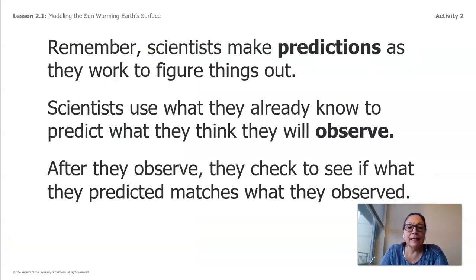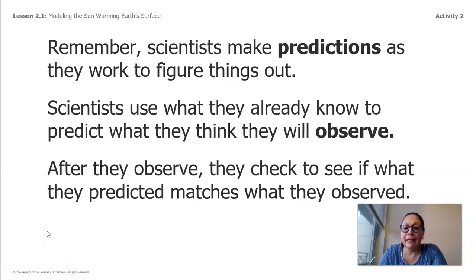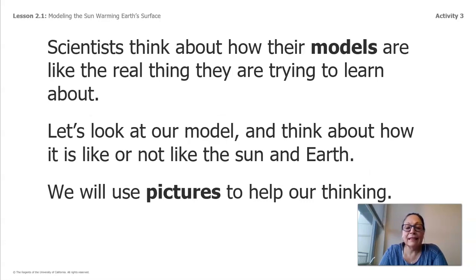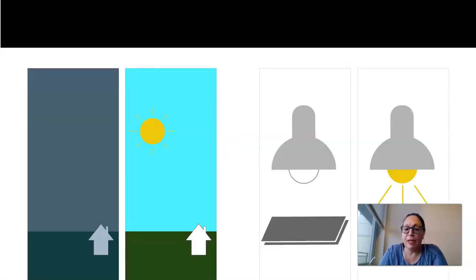Remember that scientists make predictions as they work to figure things out. Scientists use what they already know to predict what they think they will observe. After they observe, they check to see if what they predicted matches what they observed. Scientists also think about how their models are like the real thing they're trying to learn about. Let's look at our model and think about how it is — or is not — like the sun and Earth. We'll use pictures to help our thinking.